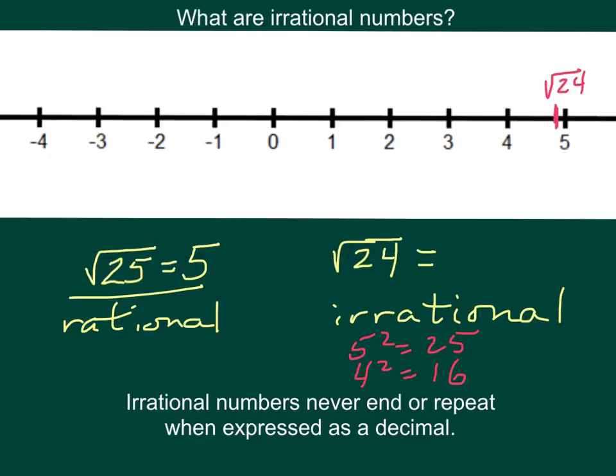If you were to work it, it would not come out evenly, and it would never end or repeat, so we call it an irrational number.